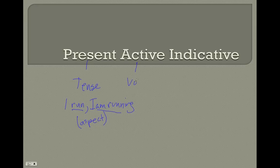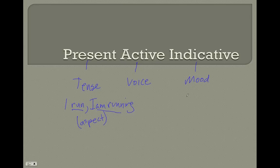The voice is going to be active. Voice can be active, middle, or passive. Active here means the subject is going to do the action. And then indicative is the mood, and that refers to the way that the verb is being viewed. There are four moods; we'll focus on the indicative in this first semester. The indicative is the storytelling mood.